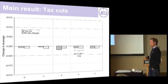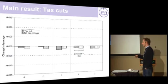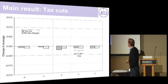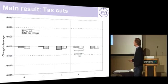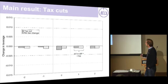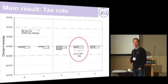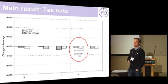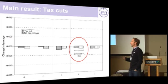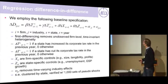We split the sample into tax increases and tax cuts. If you look at it separately, there's actually nothing in the tax cuts — no reaction whatsoever. So that's the illustration of one of the bottom lines of this paper.